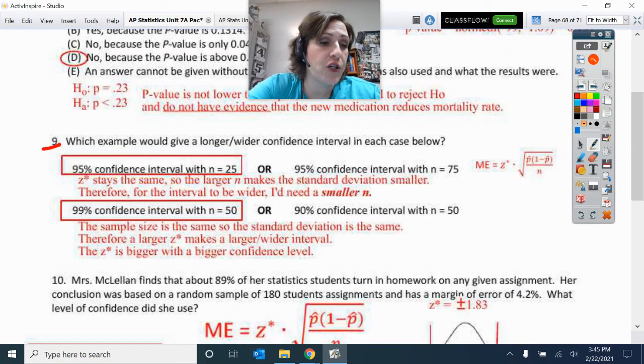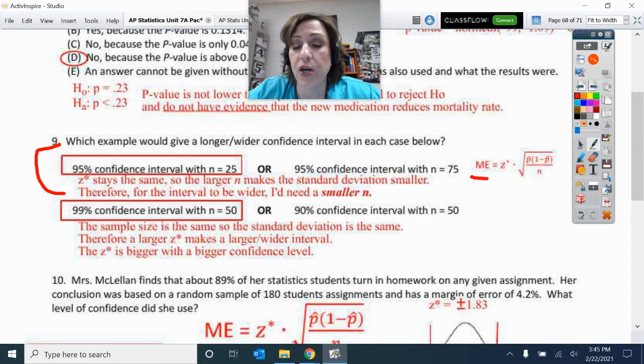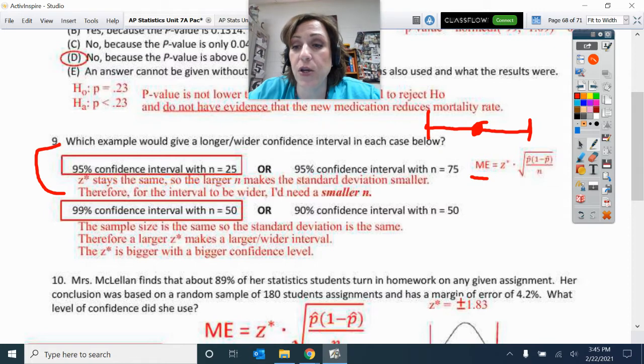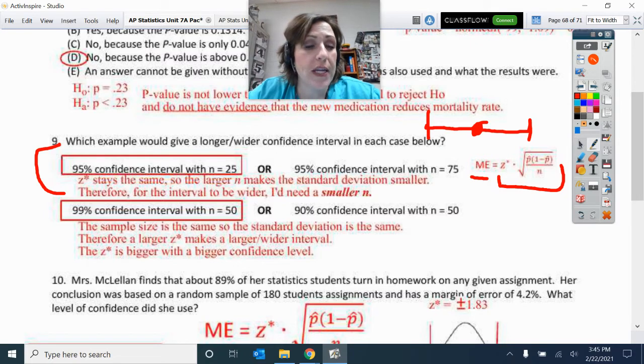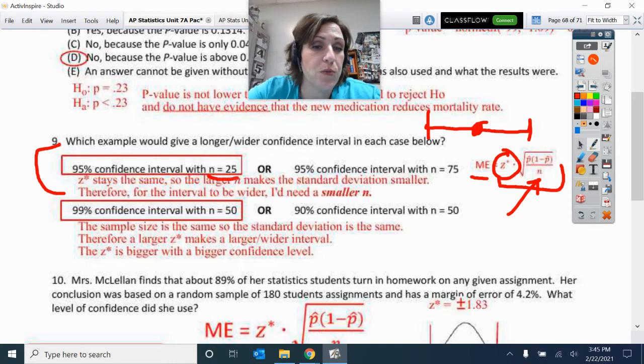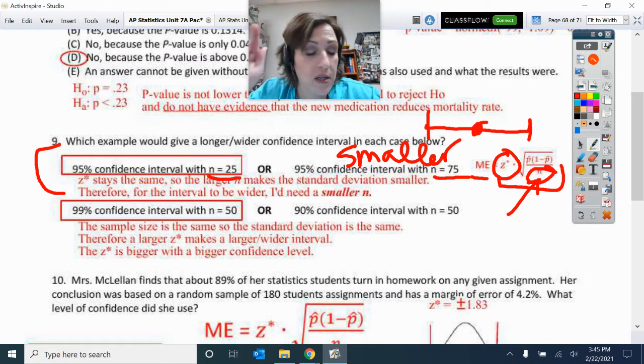So on this first question here, the confidence, Z star, see, margin of error are those whiskers on your interval. You know, here's your P hat. Then you have a margin of error up and a margin of error down. And the thing that makes this margin of error is the critical value times that standard deviation. So here they say Z star stays the same. So the question then is, what happens with sample size is changing from 25 to 75? Well, I know that as n goes up, so this one's going to be smaller standard deviation because a bigger denominator makes a smaller fraction.